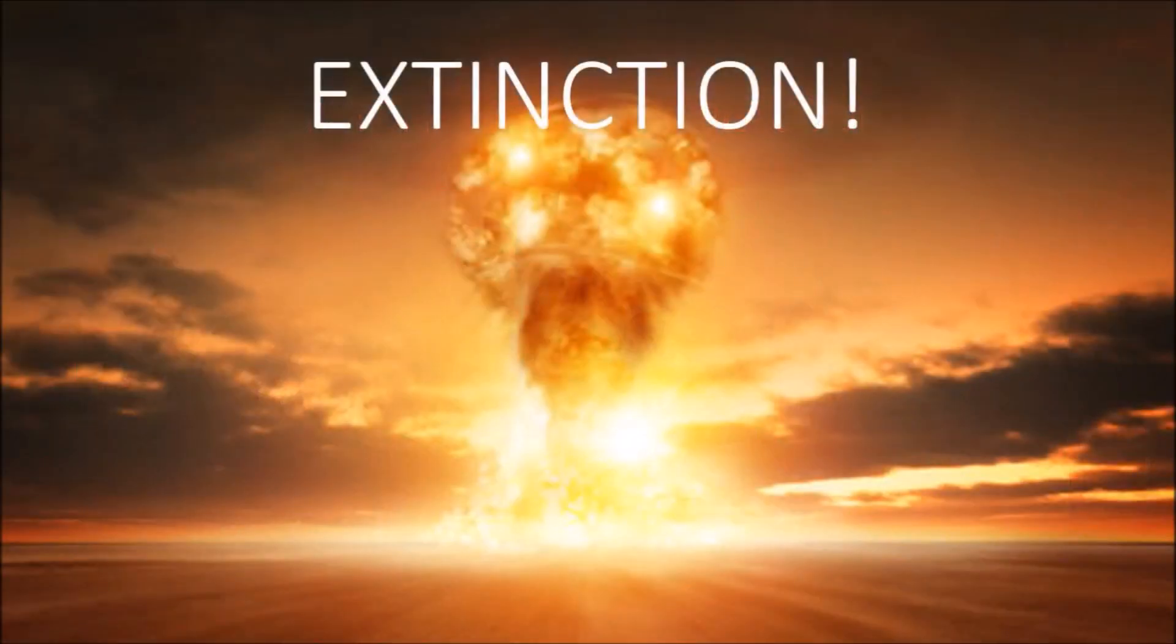Sadly, it all ended with a mass extinction event at the end of the Permian period. We don't know exactly what happened, but 251 million years ago, 83% of life on earth was wiped out. Obviously, our ancestors made it through, hiding away in their burrows.